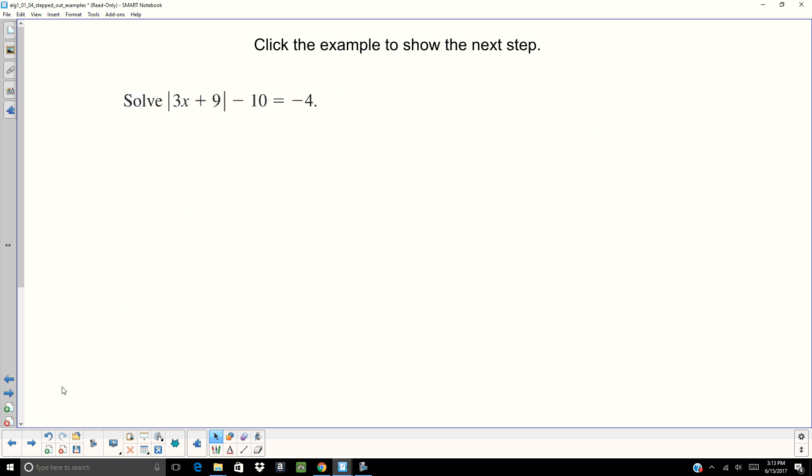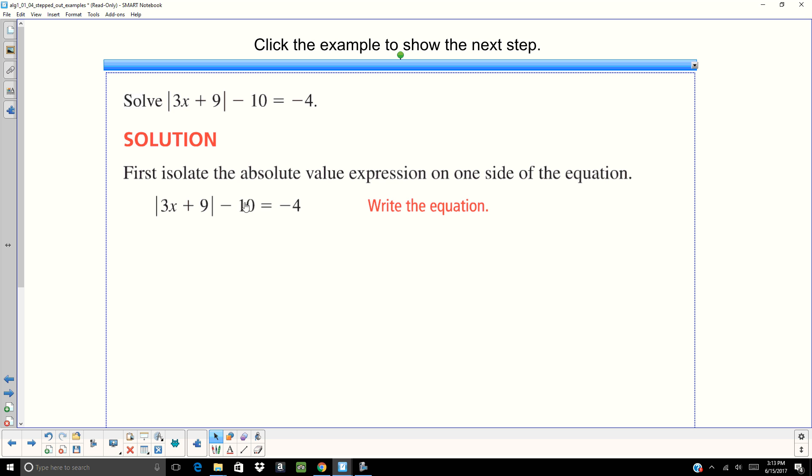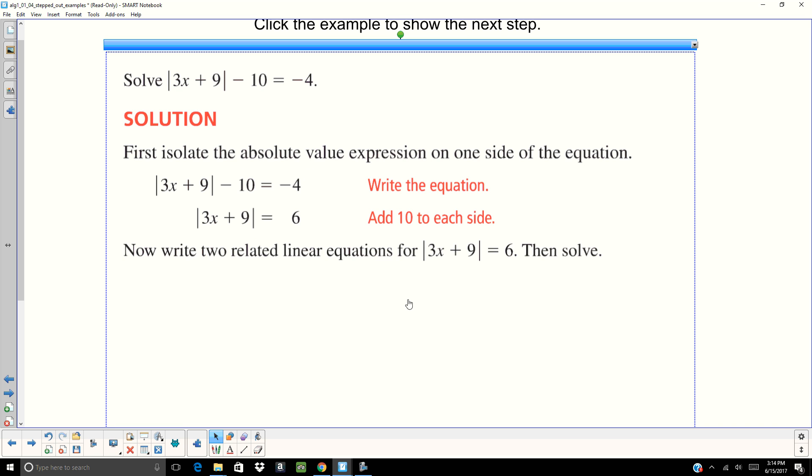All right, let's do one that's a little bit more complicated. Here we have 3X plus 9, absolute value, minus 10 equals negative 4. First thing I need to do is isolate that absolute value. So I notice, hey, I've got a minus 10. And I ask myself, what can I do to get rid of that minus 10? Well, I'm going to add 10 to both sides. And when I do that, I get 3X plus 9 equals 6.